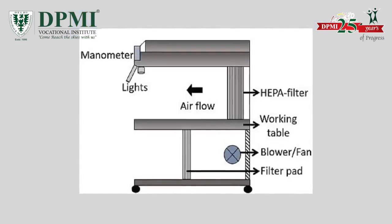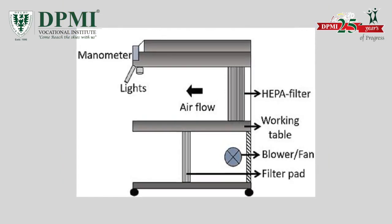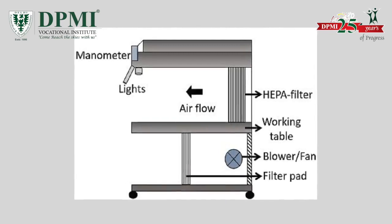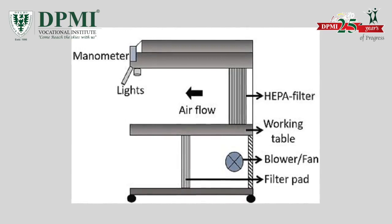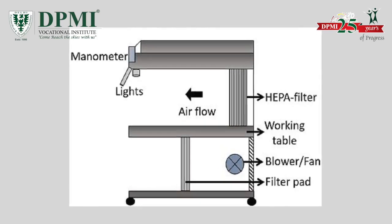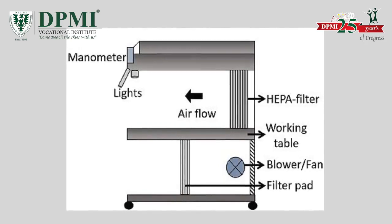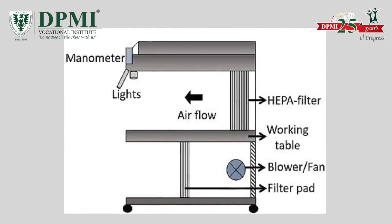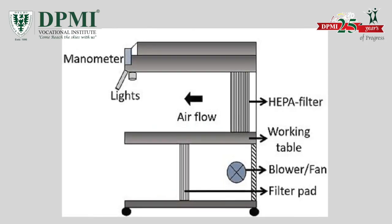A filter pad or pre-filter is present on the top of the cabinet through which air passes into the cabinet. A fan or blower is present below the filter pad that sucks in the air and moves it around the cabinet.